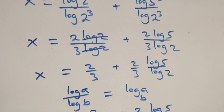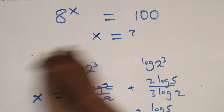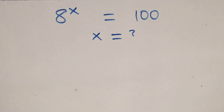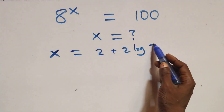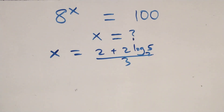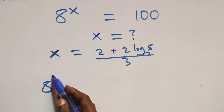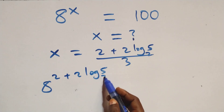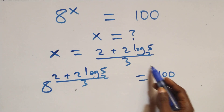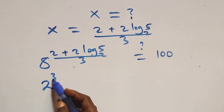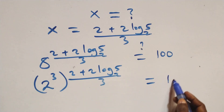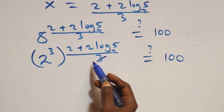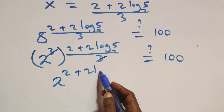Now let's check if this satisfies the given problem. We substitute the value of x, which is x equals to (2 plus 2·log₂5) over 3. That gives us 8 raised to the power of (2 plus 2·log₂5) all over 3, equal to 100. This power multiplies, and the 3 cancels, giving us 2 raised to power (2 plus 2·log₂5) equals to 100.